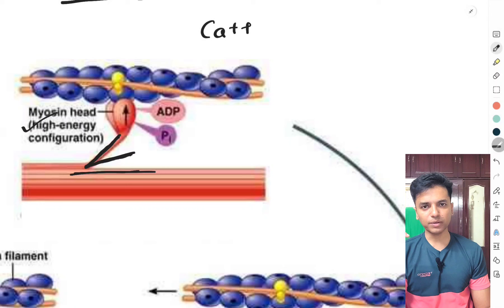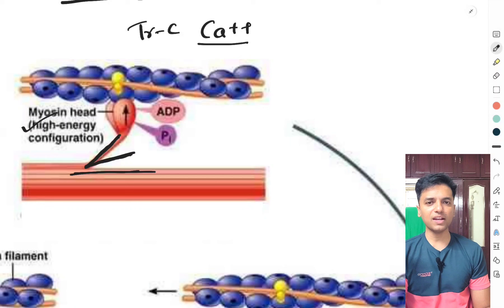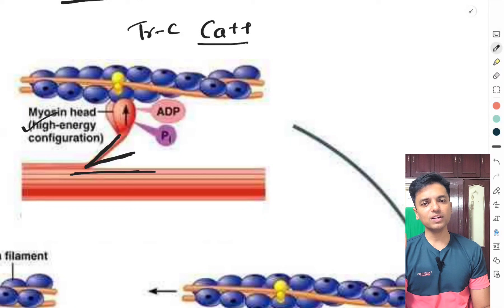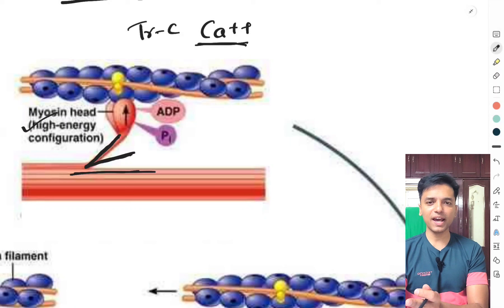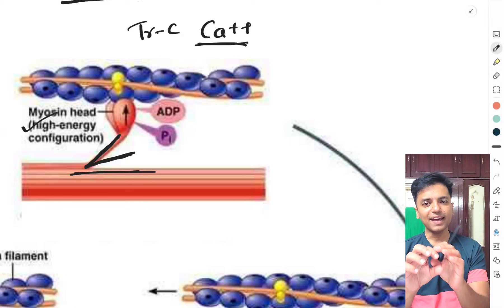Simultaneously, if skeletal muscle contraction is desired, calcium is released from the sarcoplasmic reticulum. This calcium comes and binds to troponin C. Troponin has three portions: troponin I (attached to actin), troponin T (attached to tropomyosin), and troponin C (which binds calcium). One molecule of troponin C can bind to four molecules of calcium. Once calcium binds to troponin C, there is a conformational change in the troponin molecule.